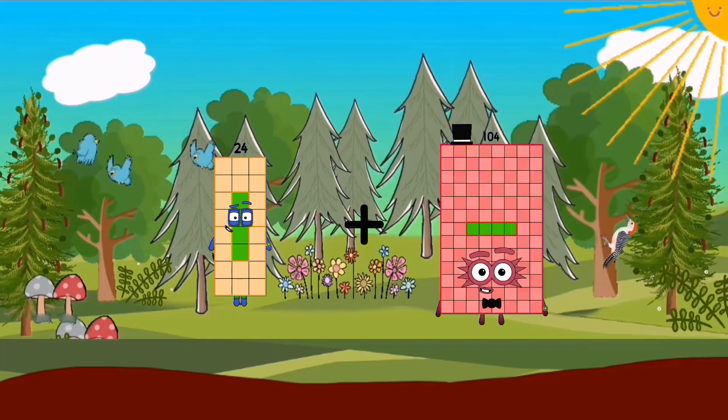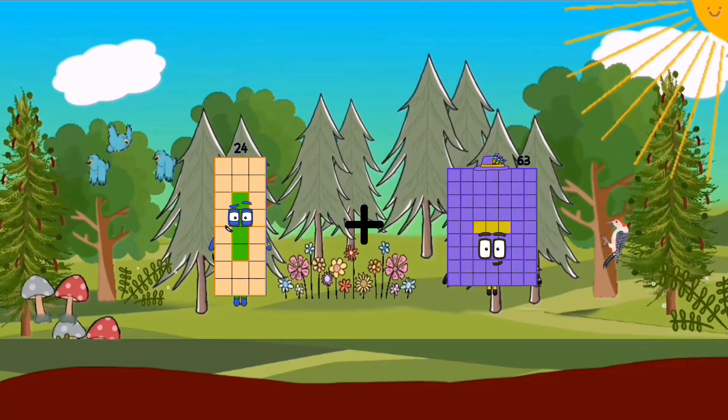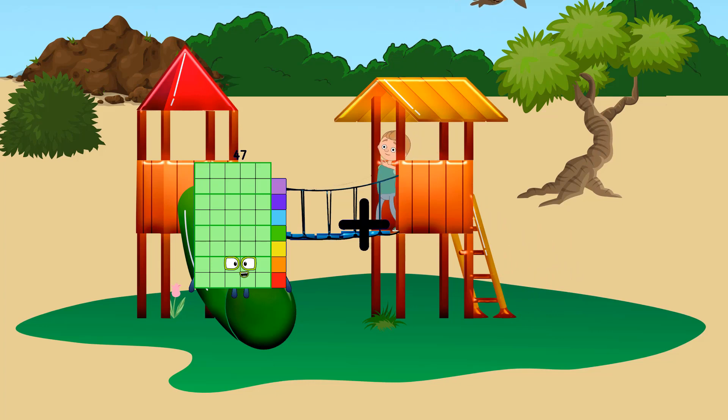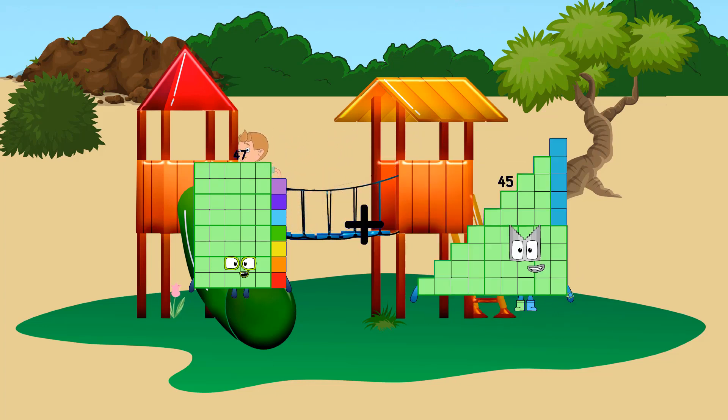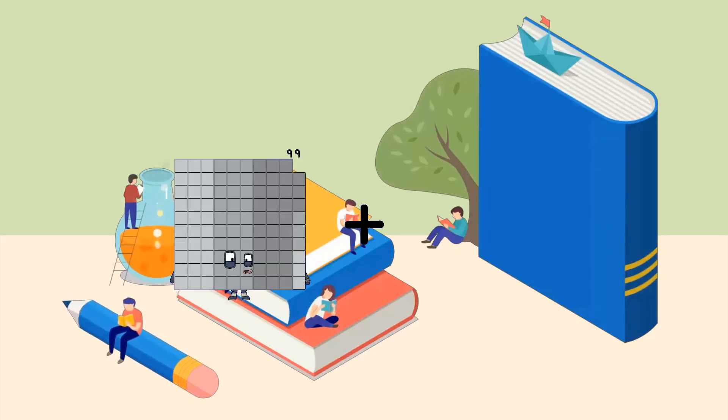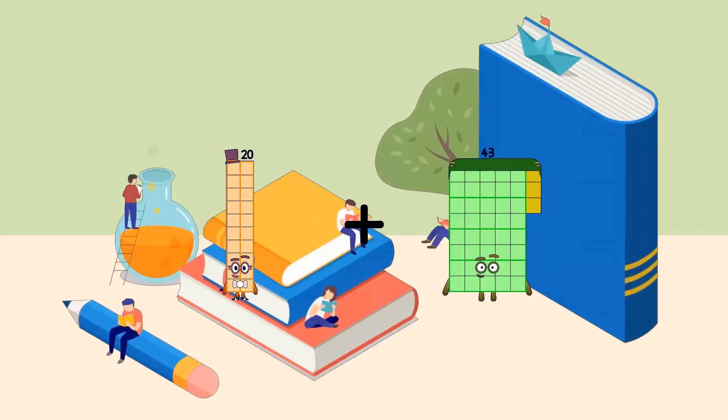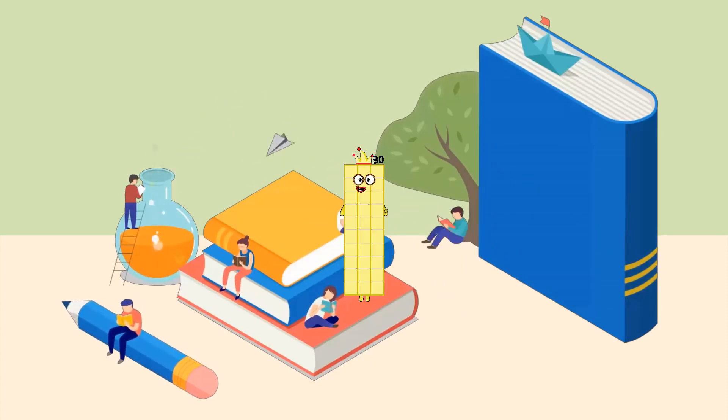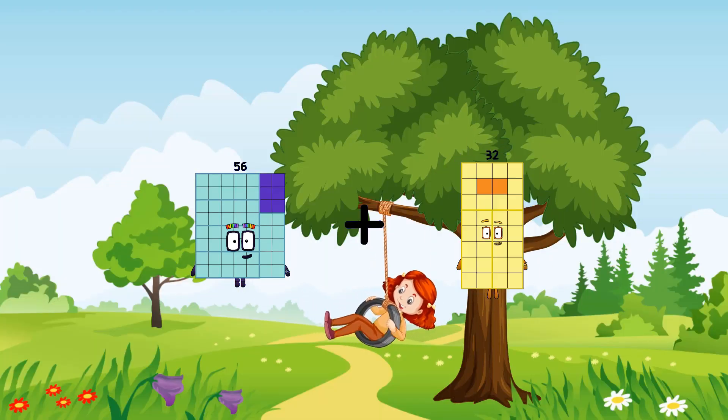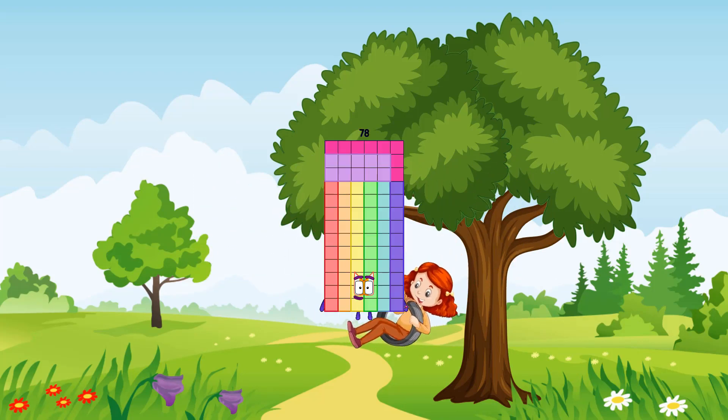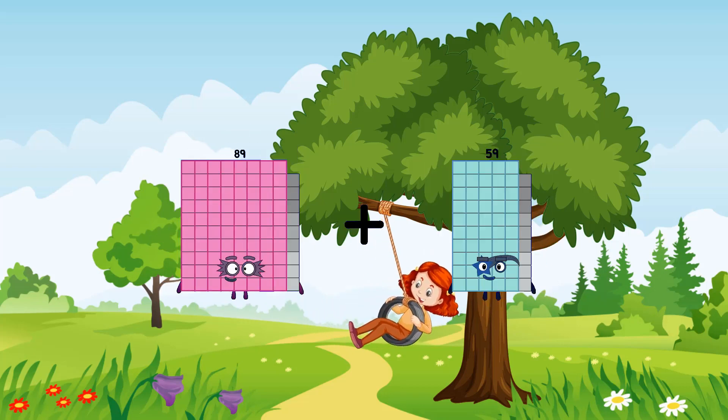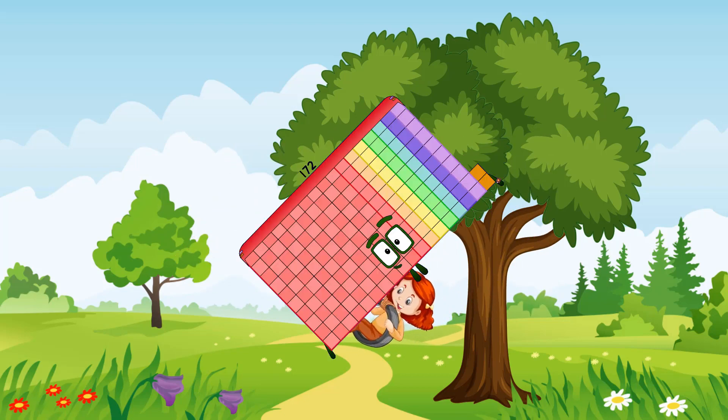24 plus 63 equals 87. 47 plus 75 equals 122. 22 plus 10 equals 30. 56 plus 22 equals 78. 89 plus 83 equals 172.